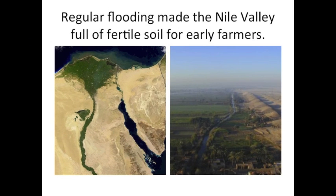The Nile River is by far the most important geographical feature in ancient Egypt. In fact, Egypt is often called the gift of the Nile because if it weren't for the river, the civilization would not have existed. Now the Nile has two unique features. The first is that it flows from the south to the north where it empties into the Mediterranean. The second is that it regularly flooded, and that regular flooding is what made the development of the Egyptian civilization possible.